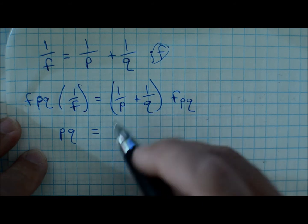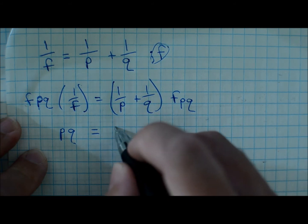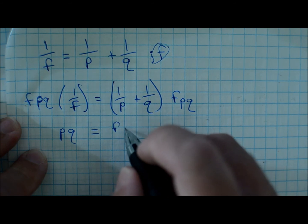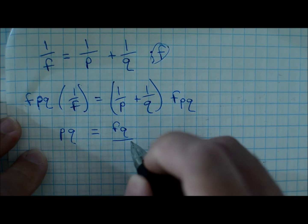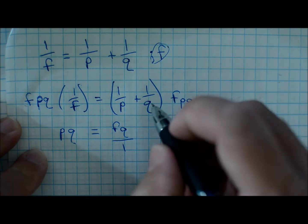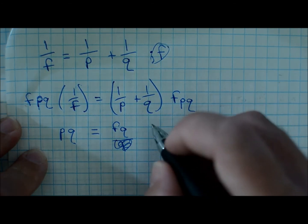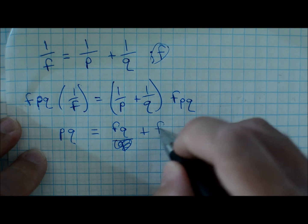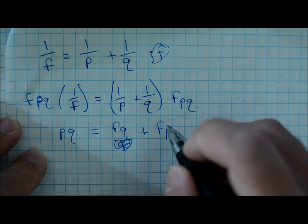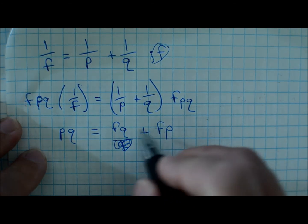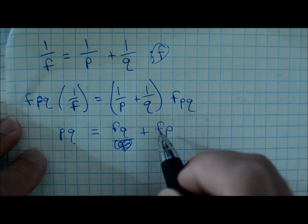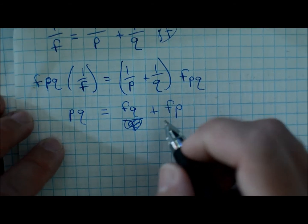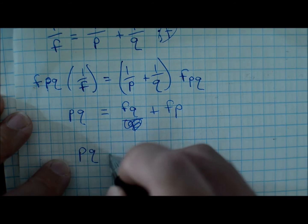PQ. That P and P become a one, so you get FQ over one plus FP. Now you've got two like terms, so the next natural step is to factor that out. So you